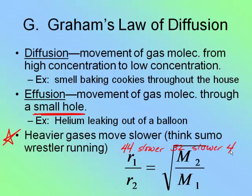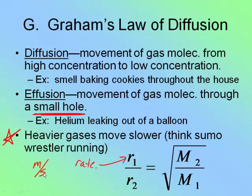Now let's look at the actual formula for Graham's Law. R is rate — like meters per second or moles per minute, whatever the problem states. M is your molar mass, meaning the weight from the periodic table. Notice that the rate of a gas is inverse to its mass: the heavier the gas, the slower it moves; the lighter the gas, the faster it moves. You can find the relative rates of two gases when you have their molecular weights.